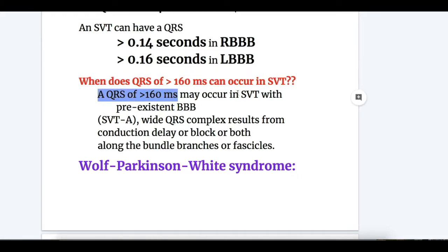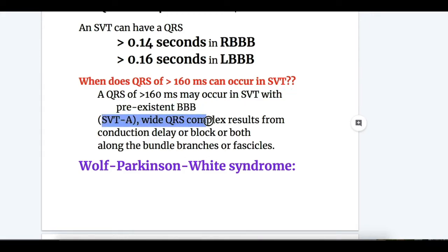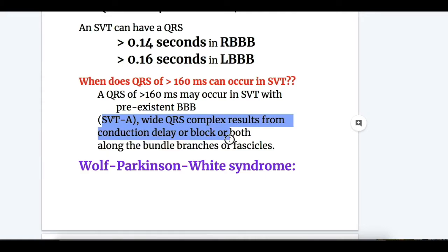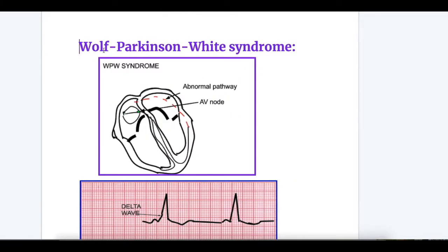A QRS of more than 160 milliseconds in SVT occurs with pre-existent bundle branch block. SVT with aberrancy causes wide QRS complex resulting from conduction delay or block along the bundle branches or the fascicles.